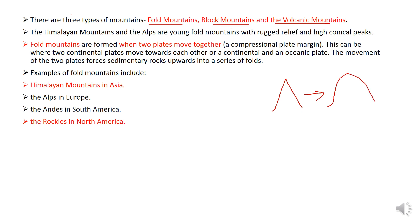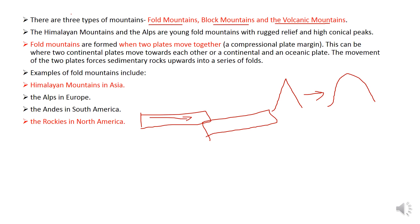Fold mountains are formed when two compressional plates move together. These plates may be two continental plates or a continental plate and an oceanic plate. When they move together, these plates force sedimentary rocks upwards into a series of folds, forming fold mountains.